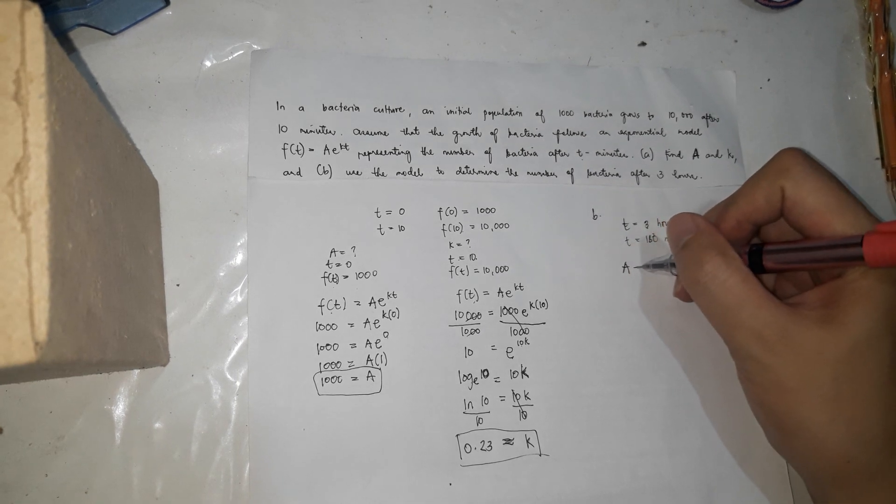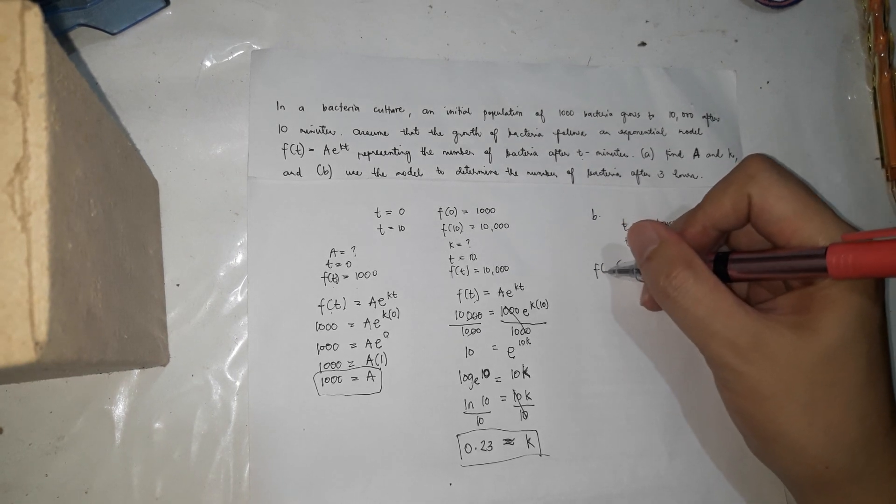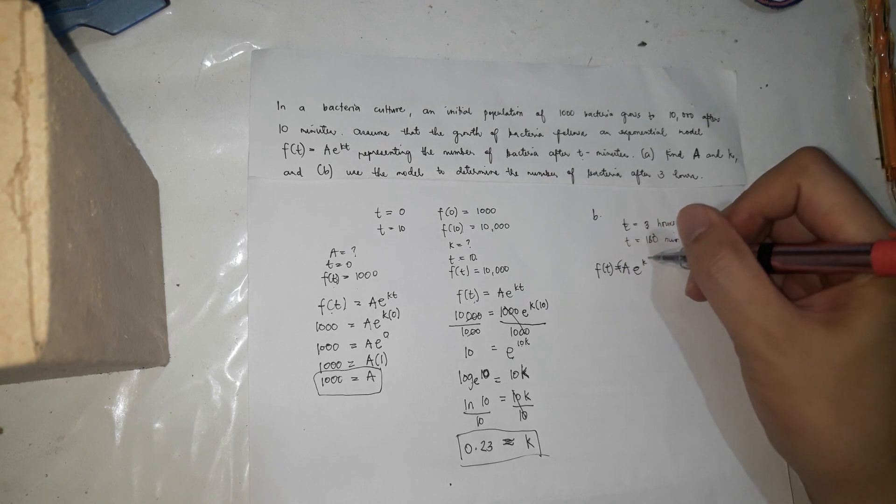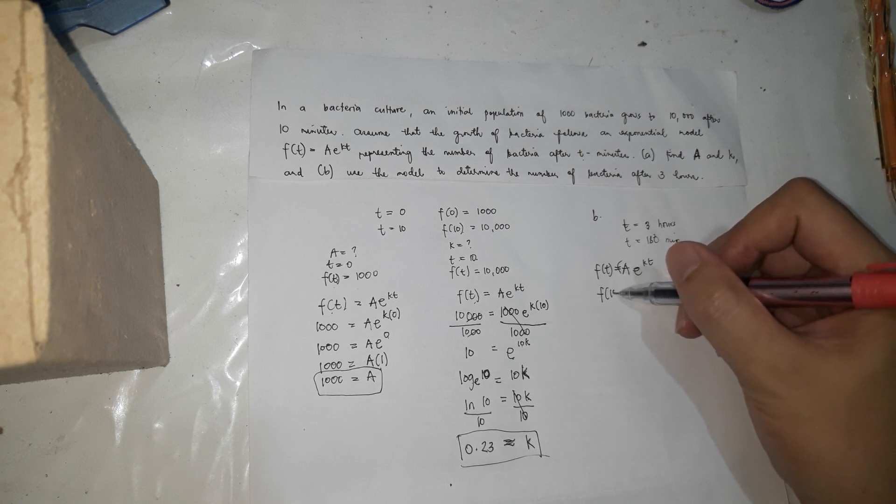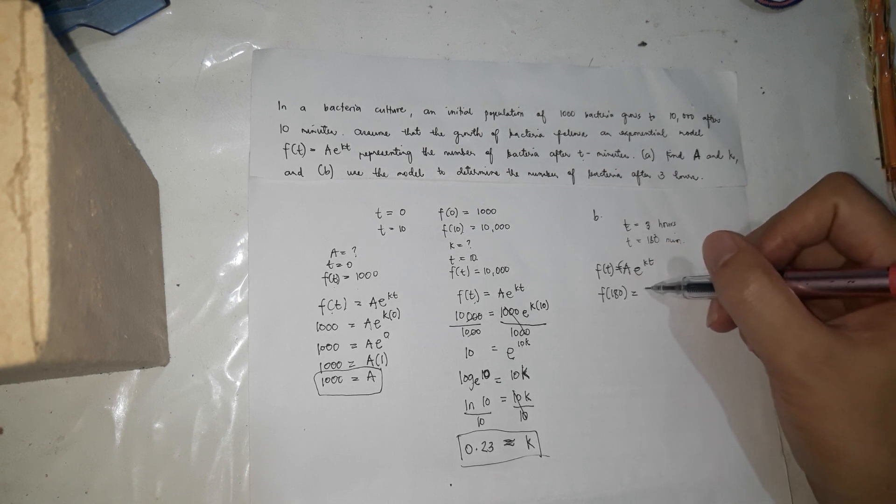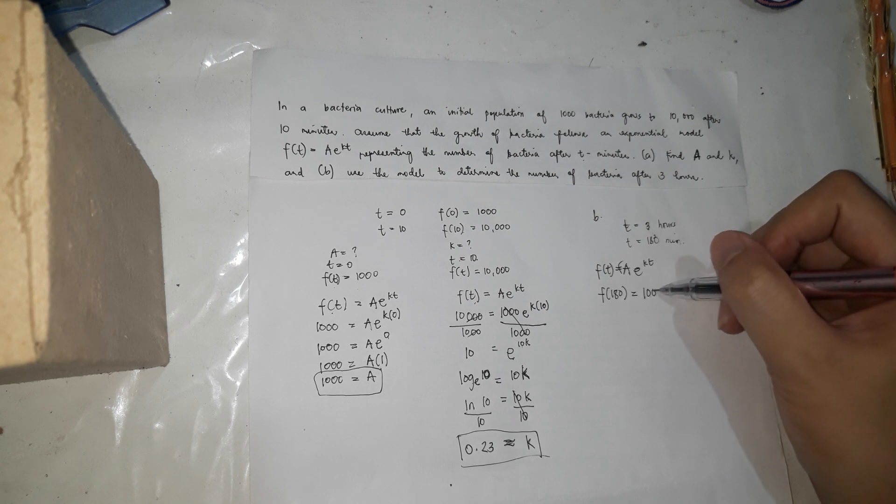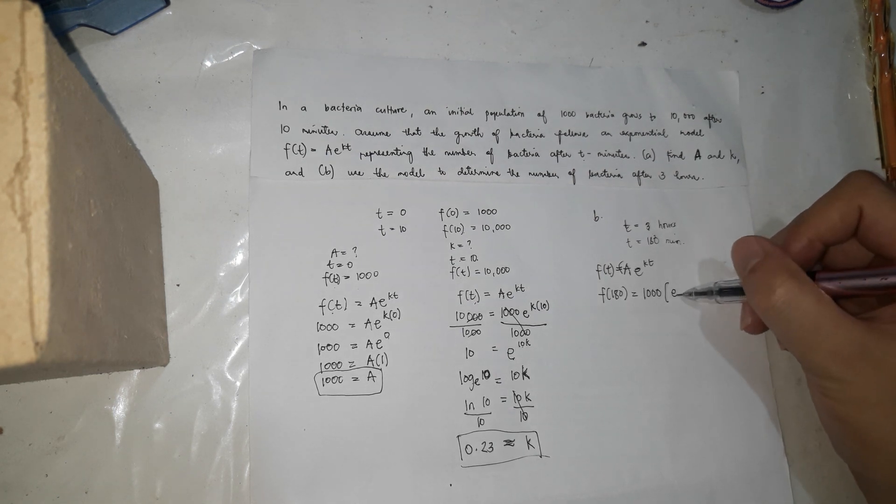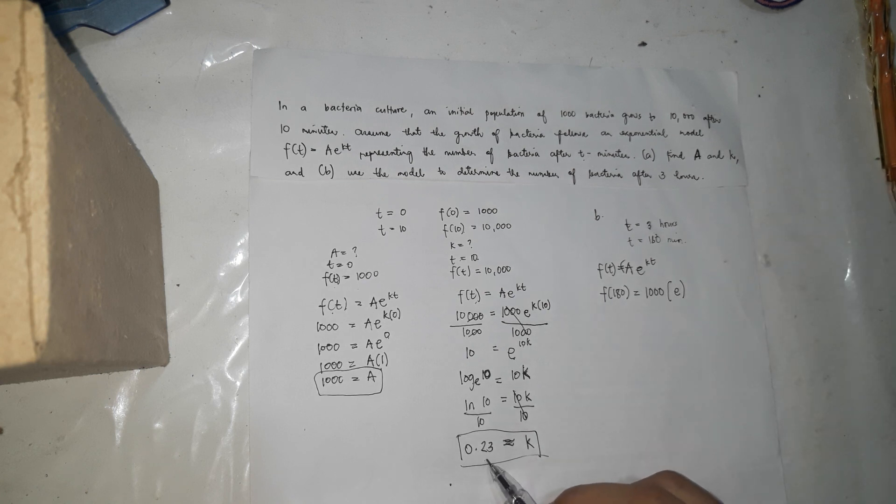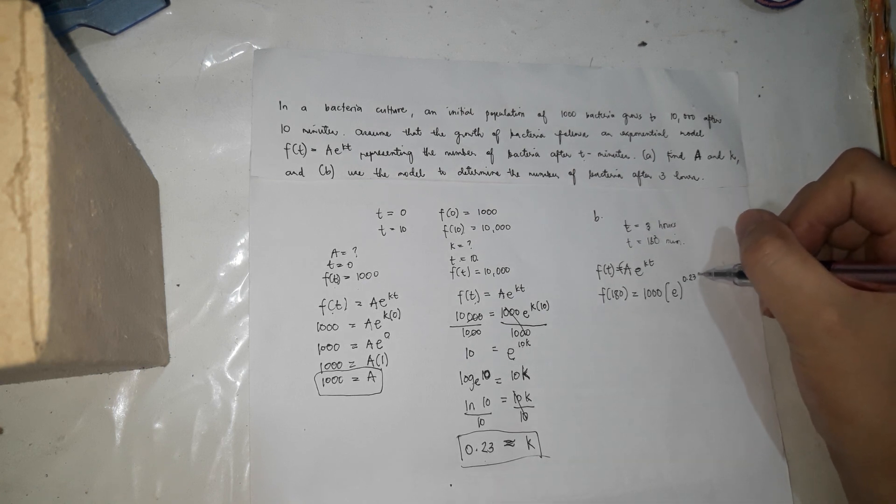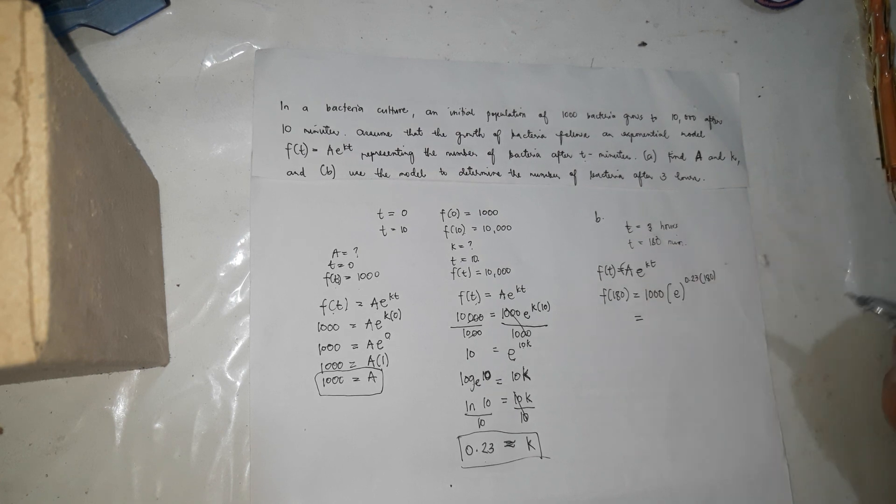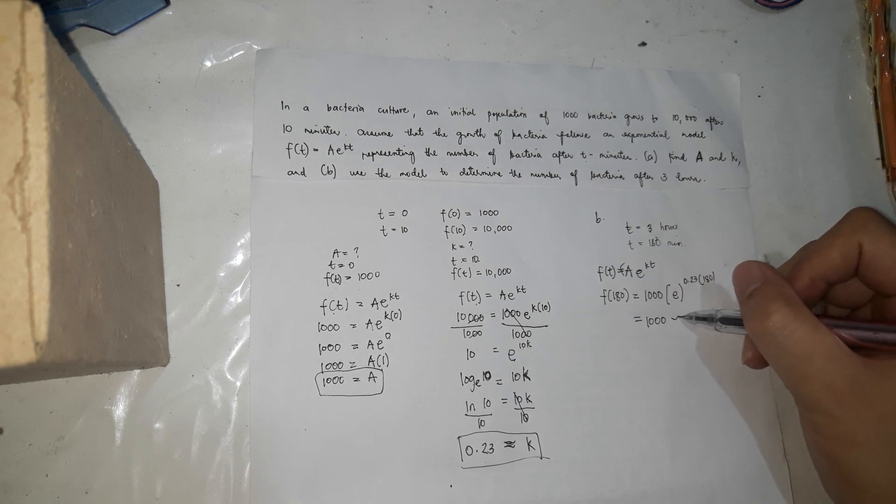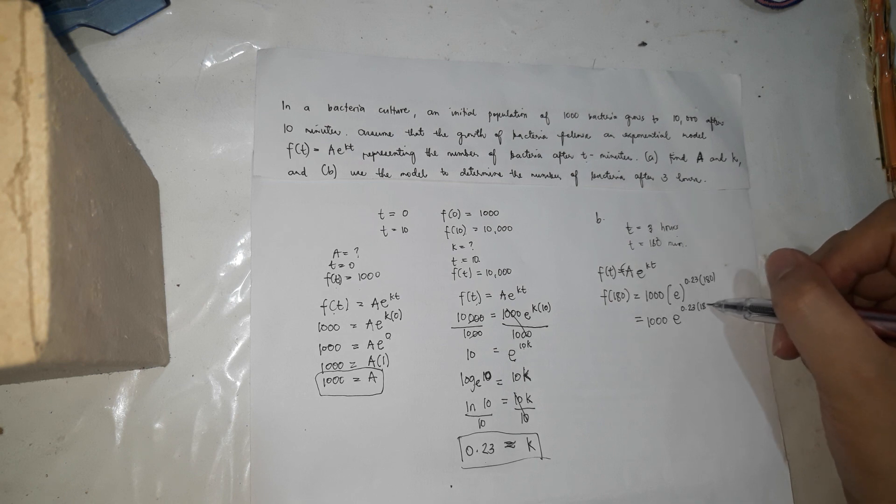So formula. The formula is f(t) equals a times e to the power of kt. So f(t), that's what we're looking for. f(180) equals, what is the value of a? That's 1,000. e to the power of k, which is 0.23. What is t? That's 180.